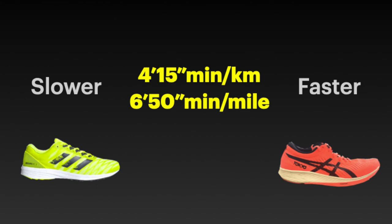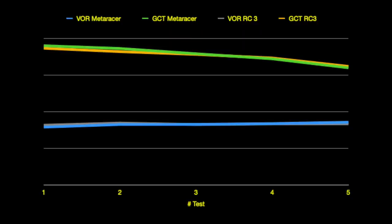So basically, why for the first two tests — the slower ones — the RC3 seems to perform better than the MetaRacer, for the faster tests the MetaRacer has better results. We can also notice this change in the graph, where in green and orange we have the ground contact time of the MetaRacer and the RC3 respectively, and in blue and gray we have the vertical oscillation ratio of the MetaRacer and the RC3 respectively. So guys, we noticed that once we increment the pace, the carbon plates start to perform better. How much better I cannot really quantify from this test, but it would be interesting to check this result even for faster paces. Probably the difference is bigger, but the result is clear.